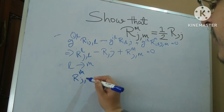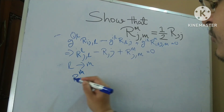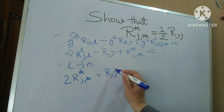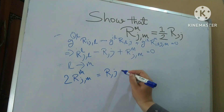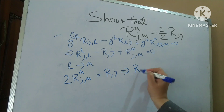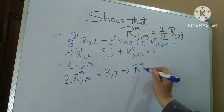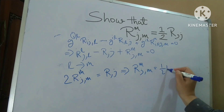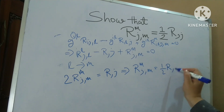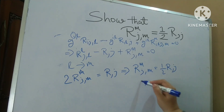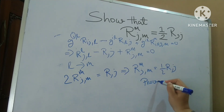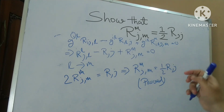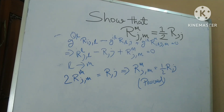This gives R_MJ comma M equals to R comma J, so I deduce that R_MJ comma M equals to half R comma J. Proved. So friends, thanks for watching. I hope I have made this concept clear.